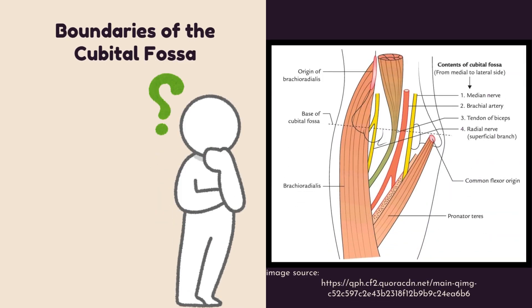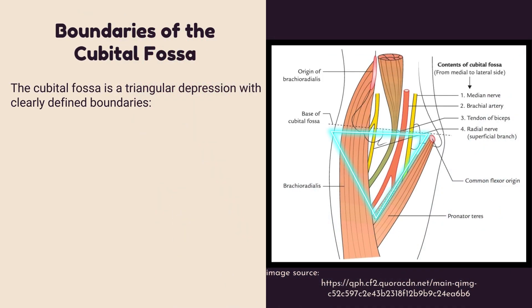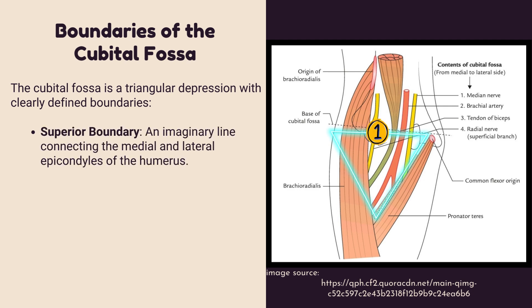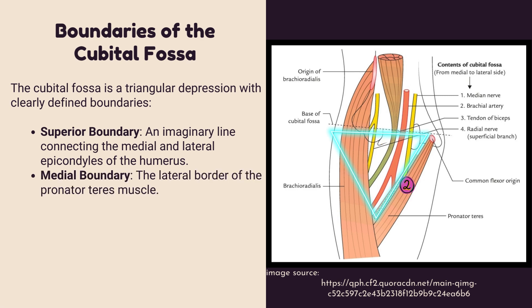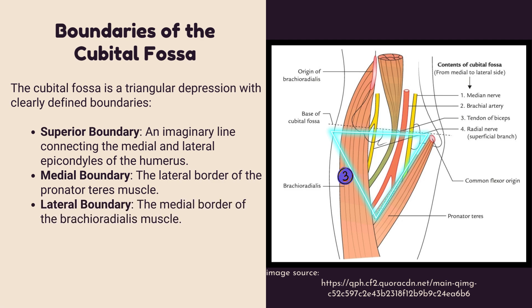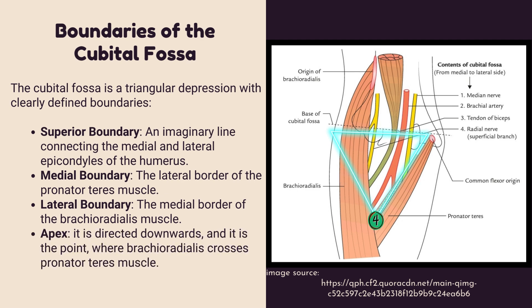The cubital fossa is a triangular depression with clearly defined boundaries. The superior boundary is an imaginary line connecting the medial and lateral epicondyles of the humerus. The medial boundary is the lateral border of the pronator teres muscle. The lateral boundary is the medial border of the brachioradialis muscle. The apex is directed downwards and is the point where brachioradialis crosses the pronator teres muscle.